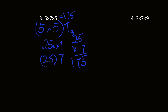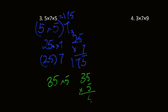If I grouped 5 and 7 instead, I would get 35 times 5, which I assume is the same as 25 times 7. Let's check: 35 times 5 — 5 times 5 is 25, write the 5, carry the 2. Then we get 175, which is what we got before.